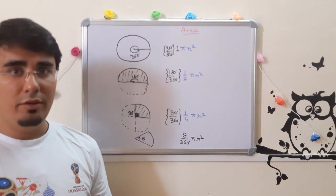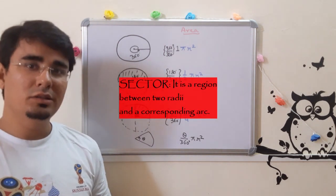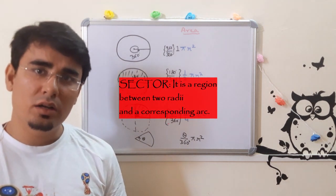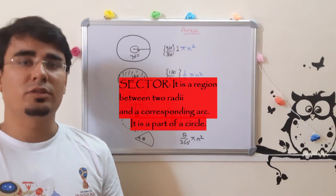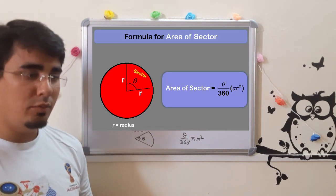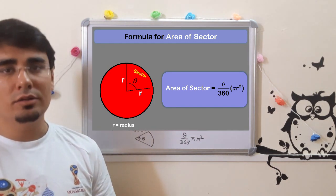Let us recall what we have learned as of now. First, what is a sector? A sector is a region between two radii and a corresponding arc. It is a part of a circle. How to find the formula? We have done it. The formula is θ/360 × π r².